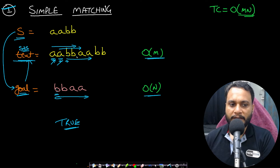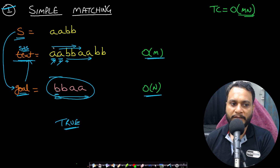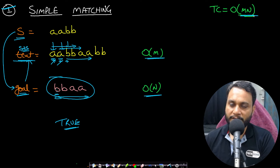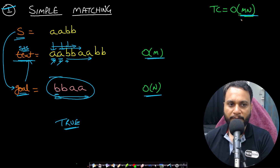In the worst case scenario, for every starting point we need to do order of n matches, so the time complexity of this brute force approach is O(m × n).